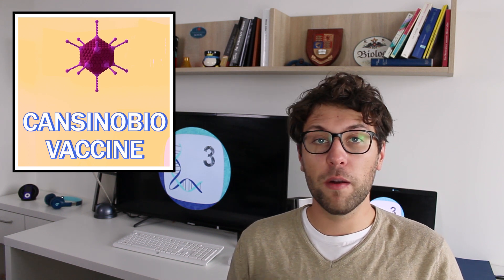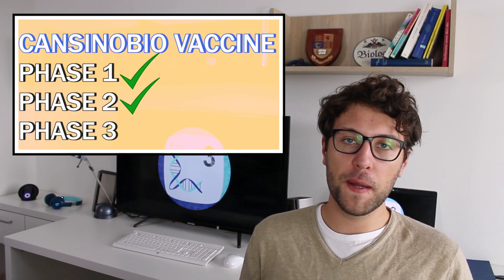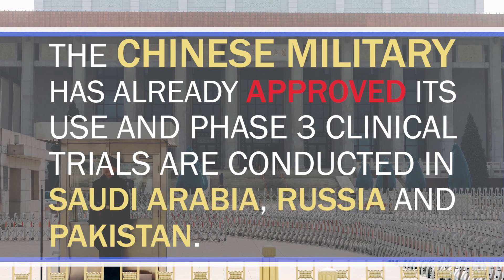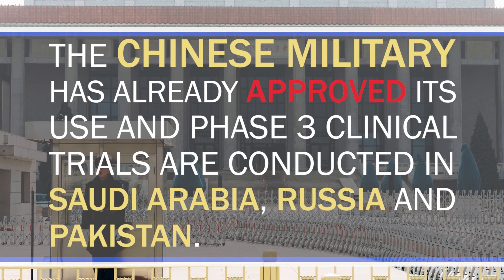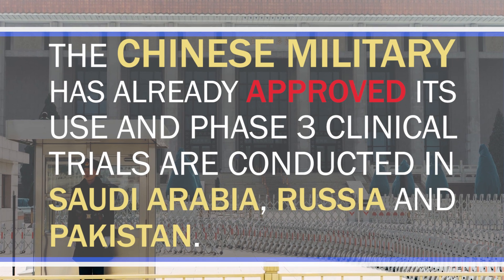Another adenovirus based vaccine has been developed by the company CanSinoBio. This vaccine has shown good results during phase one and phase two clinical trials. The Chinese military has already approved its use and phase three clinical trials are conducted in Saudi Arabia, Russia or Pakistan. Then there is Sputnik V which has been approved in Russia. The development of Sputnik V has been kind of rushed so I cannot really tell you how promising the first results have been so we have to wait for that.